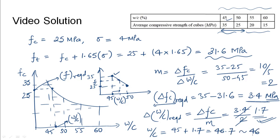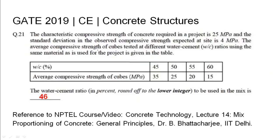In summary, the characteristic compressive strength of concrete required in the project and its standard deviation were given as 25 MPa and 4 MPa. A table was provided for water-cement ratios and average compressive strengths. The water-cement ratio required for the mix was found to be 46. The relevant NPTEL reference has been cited.